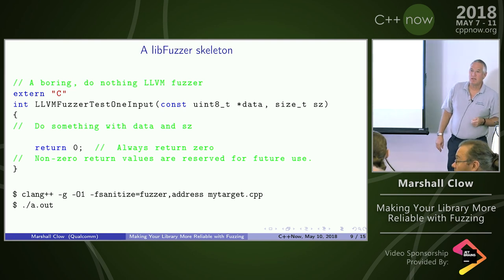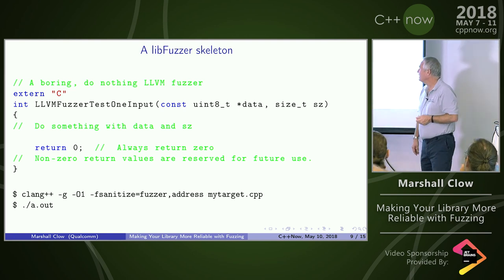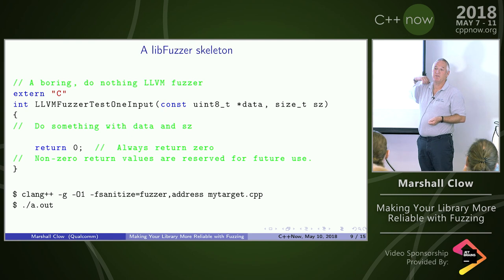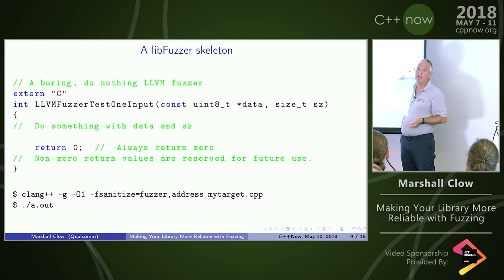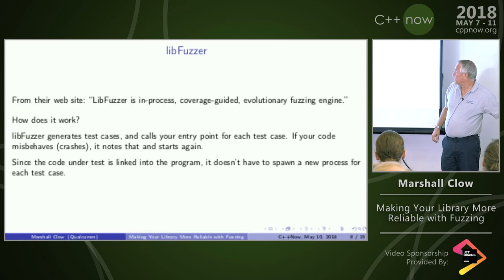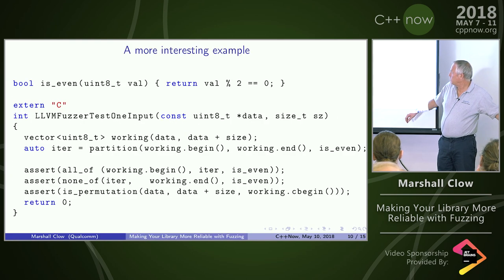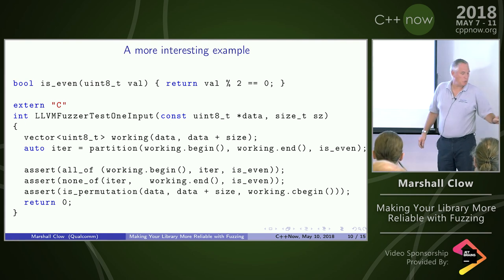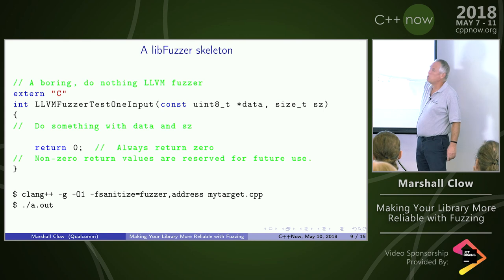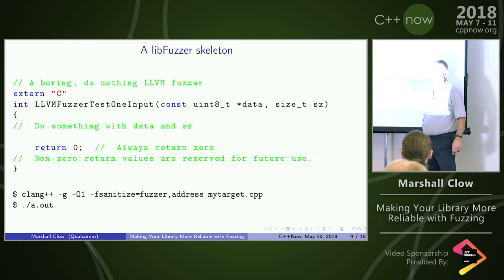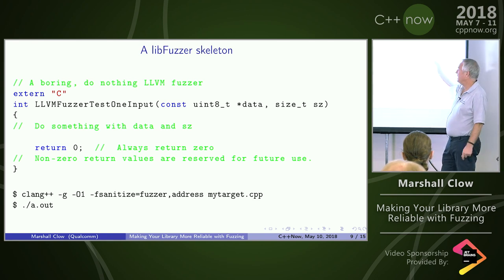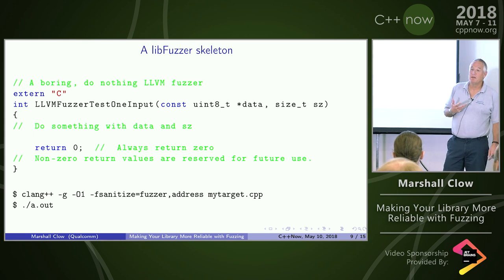Q: It says always return zero — what happens when I return 42, or what happens when I throw an exception? A: If you throw an exception and let it escape from this function, that will get treated as a crash, as a misbehavior — just like an assertion firing in the terminal example. An exception escaping is a crash. The reason you always return zero is because the people who wrote libfuzzer have said reserve this for future work — they want to be able to say at some point that non-zero returns will mean something, but not yet.